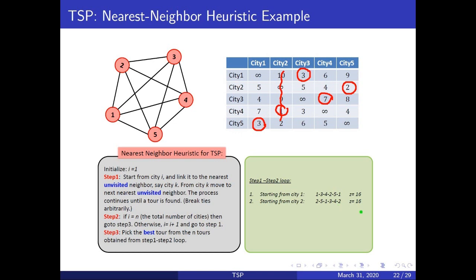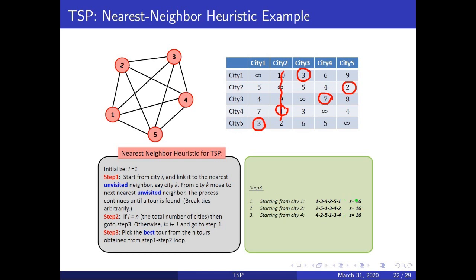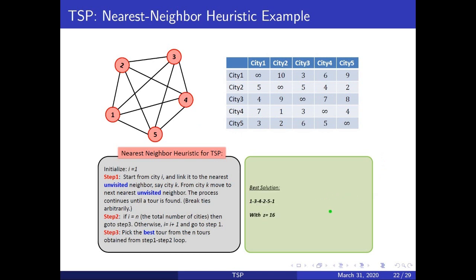Now we repeat this procedure starting from all the possible cities — for example, city number 3, 4, and 5 — and these are the corresponding nearest neighbor tours. From these we will pick the minimum. Here we have 3 minimum tours, and this is the greedy solution or the nearest neighbor solution. Since there is a tie, we can pick any of these tours arbitrarily and declare it as our best solution.